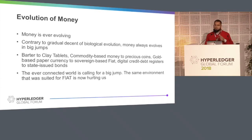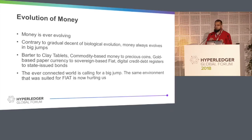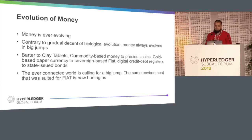Contrary to biological descent of evolution, money always evolves in big jumps. You have salt, and then suddenly you get gold. And then from gold, you get paper currency. So it's not a very gradual increase of evolution. That's the difference.